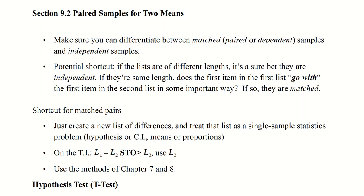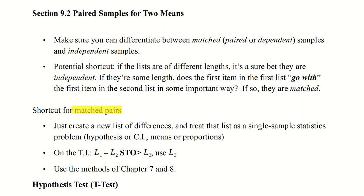We're going to see an example where we're talking about a single patient at two different times as they recover from a heart attack. Now if you are talking about matched pairs, there is a shortcut — that's basically taking you back to chapters 7 and 8. We form the differences and our calculator will do this for us. Then we do the single sample statistics, whether it's a hypothesis test or a confidence interval, for that list of differences. On a TI calculator, we simply enter the data into two lists, then form a third list that's nothing more than their difference, and then go back to the methods of chapters 7 and 8.